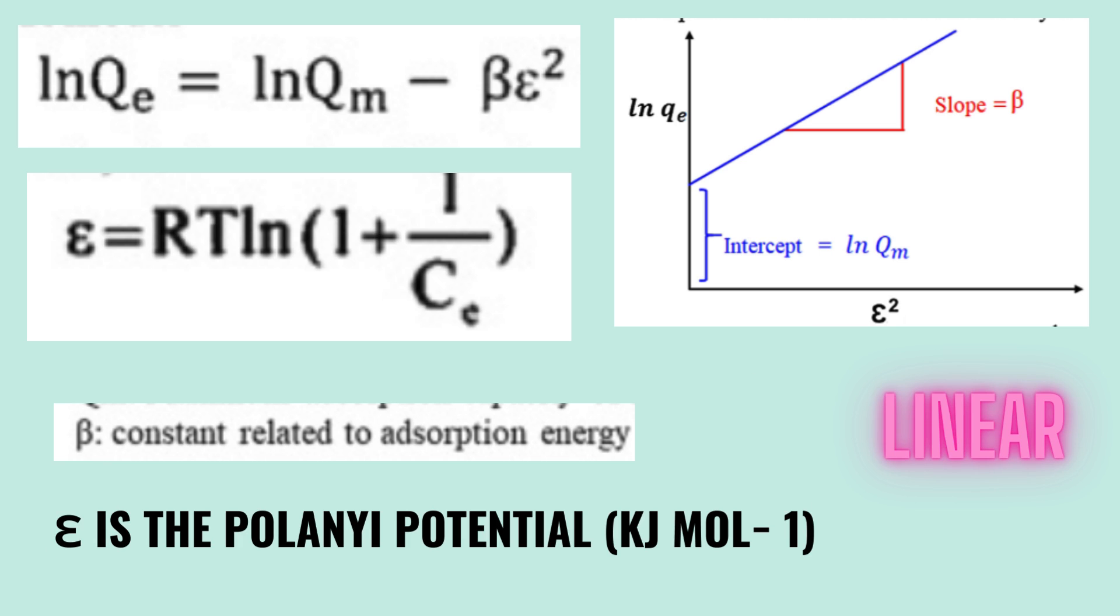The linear equation for Dubinin-Radushkevich isotherm model can be written as ln Qe equal to ln Qm minus beta epsilon square, where Qe is the amount adsorbed at equilibrium, Qm is the maximum adsorption capacity, beta is the constant related to adsorption energy, epsilon is the Polanyi potential.